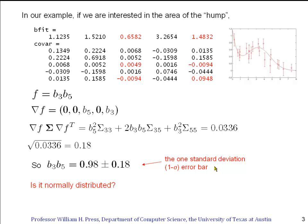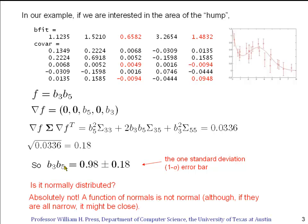By the way, is the uncertainty in b3*b5 normally distributed? Not on your life. A function of normally distributed random variables is, in general, not normal. Now, if the distribution of the individual pieces that go in is very narrow, then the function of the normals might look approximately normal, might be close. And we'll see in this example it actually is reasonably close, but there's no reason that it should be exactly normal.